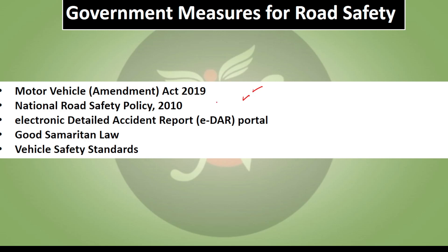The Union Cabinet has approved the National Road Safety Policy, which includes provisions for emergency medical care. A central repository has been set up to manage road accident data across different states. This helps families of victims get relief. There is also a law to help road accident victims with personal assistance. Vehicle safety standards have also been introduced.